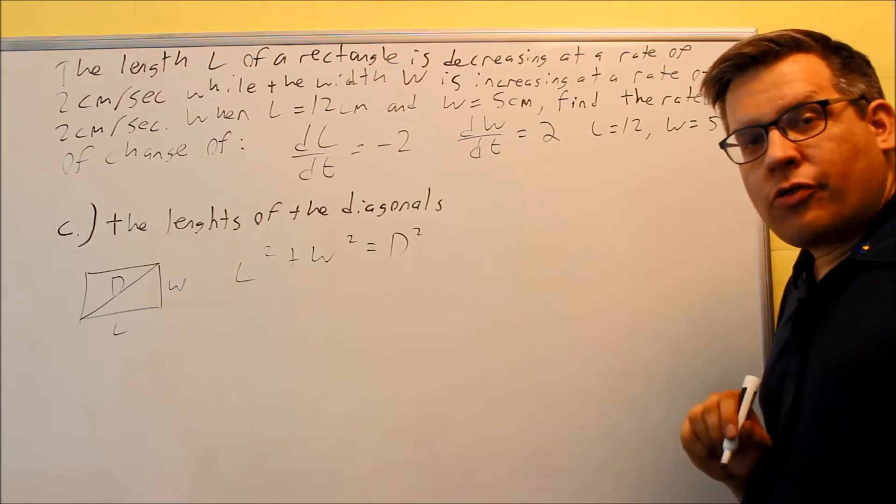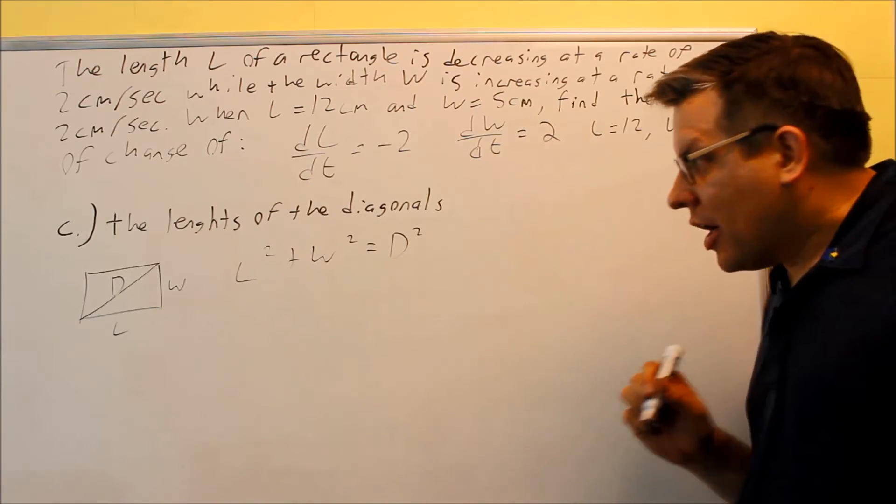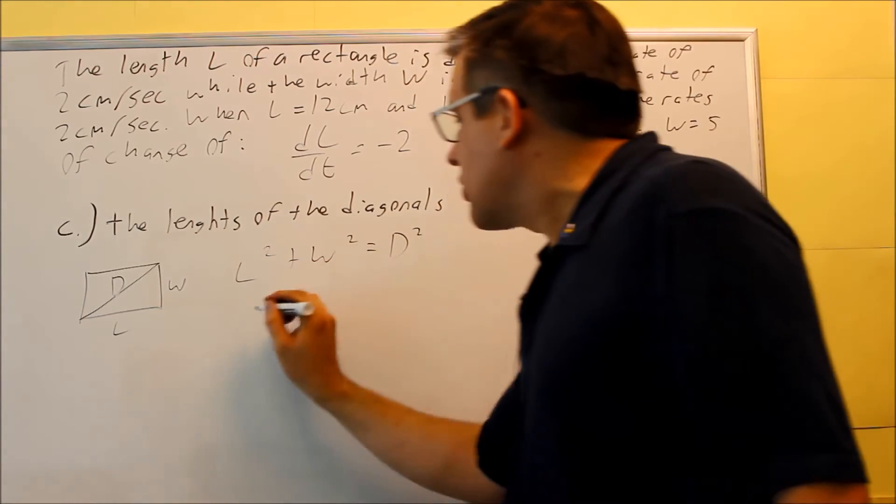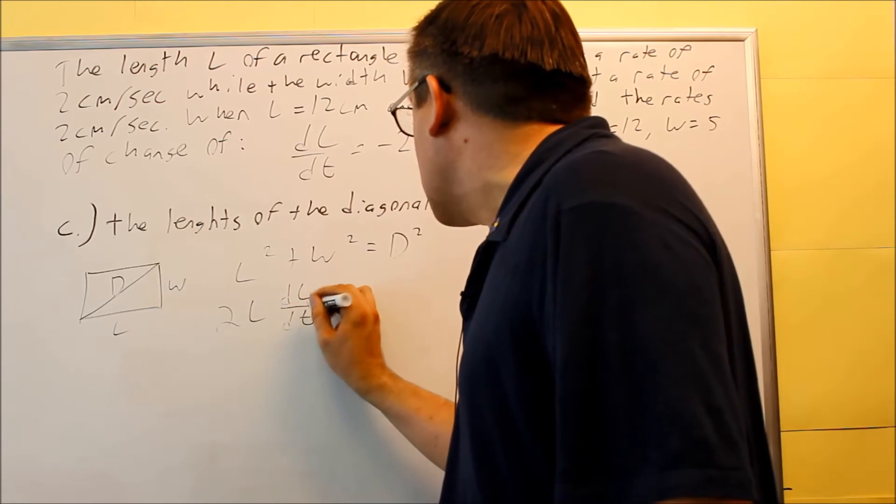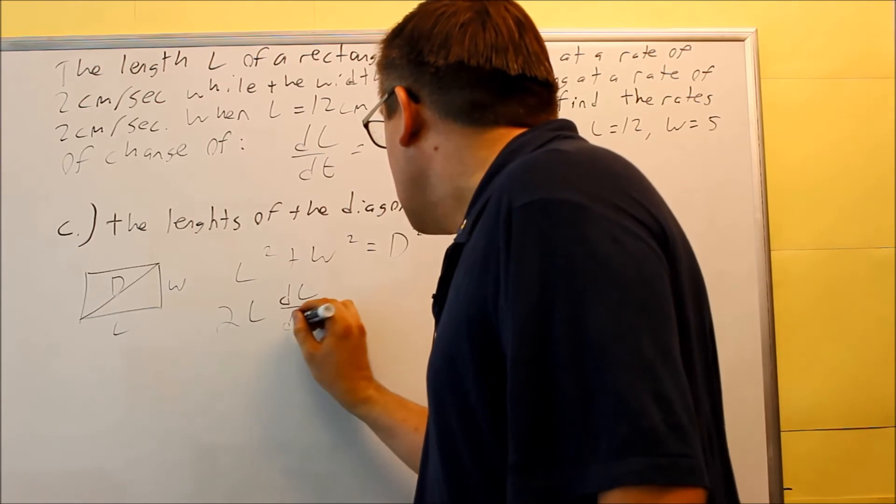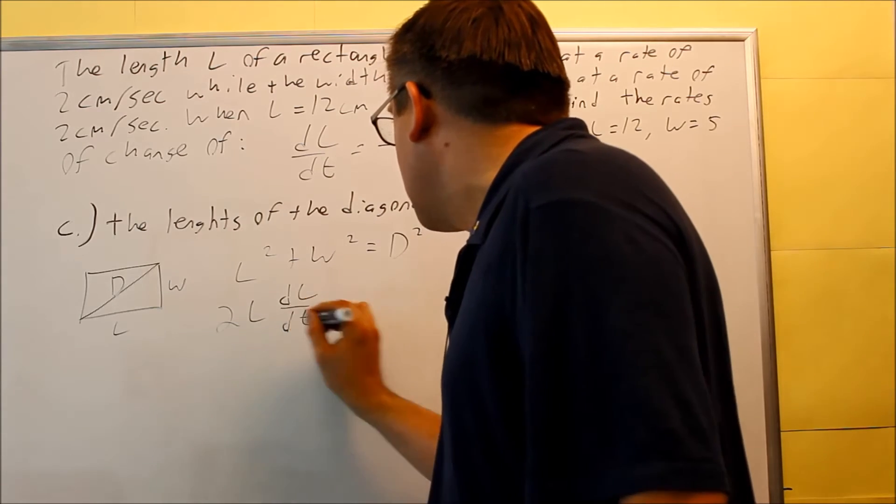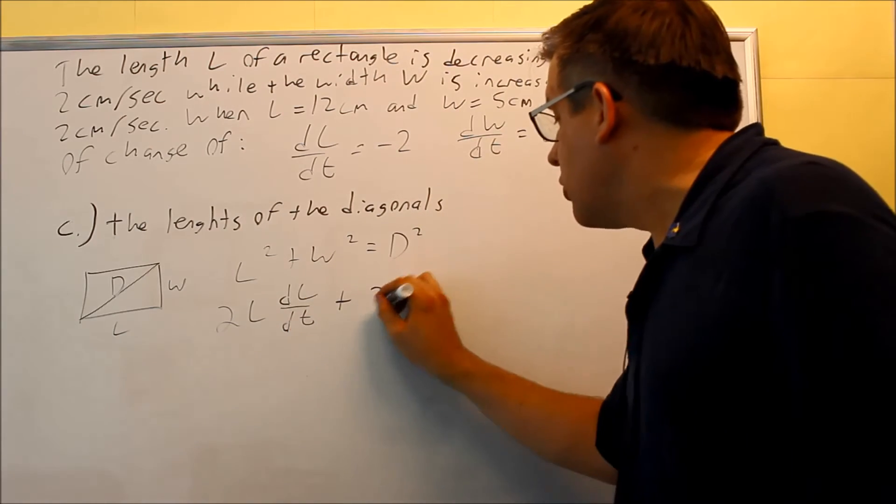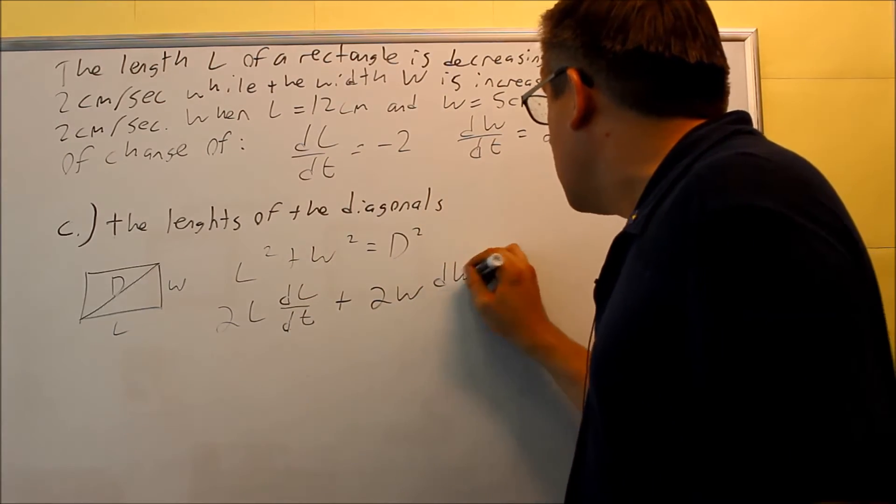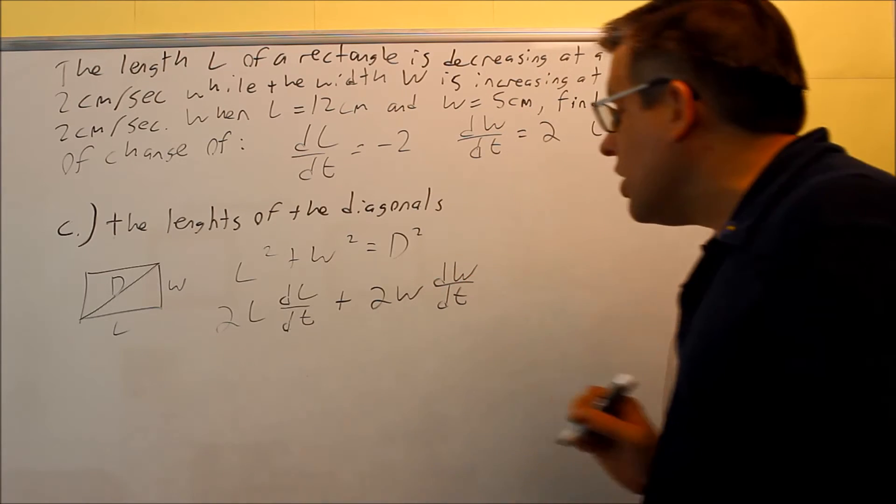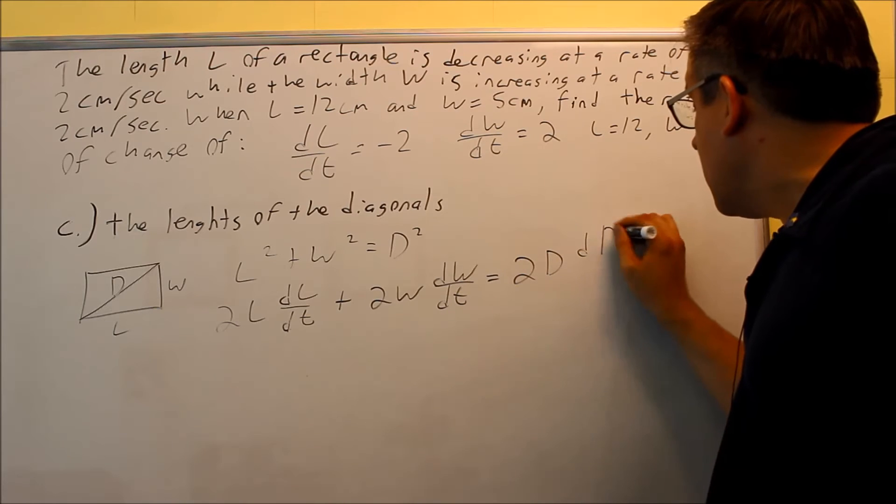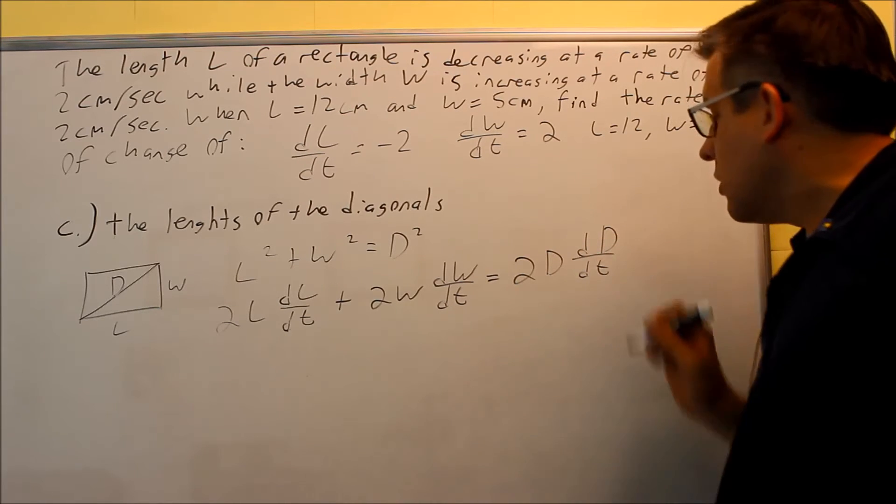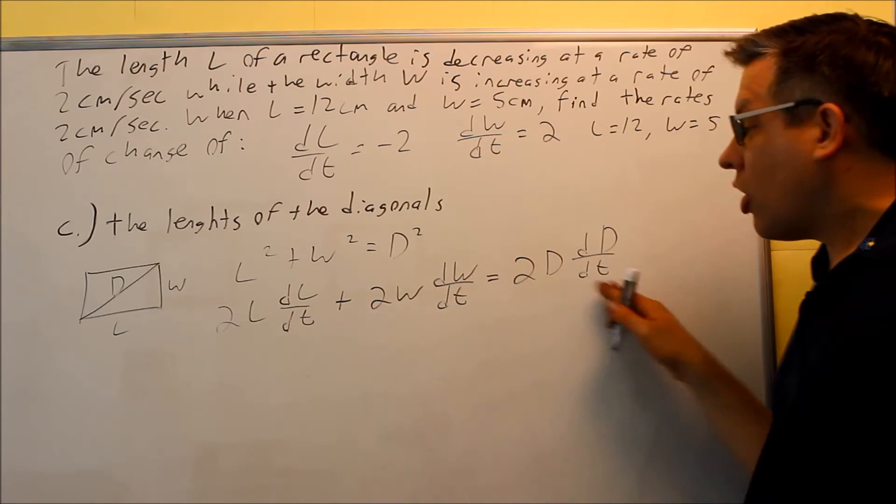This is the formula we're going to be applying here. Now we want to take the derivative of both sides with respect to time. We've got to use chain rule on all those. So the 2 is going to come down to L, and then don't forget to do the derivative of the inside. You're going to have dL/dt here. And then next one, 2 comes down W, dW/dt. And at the end here, the 2 comes down D, you have dD/dt. So we did the chain rule all the way across.